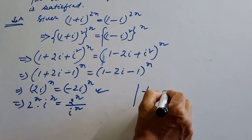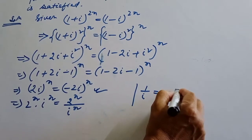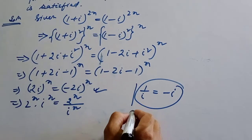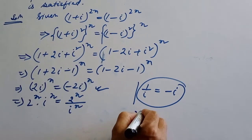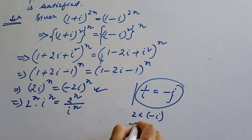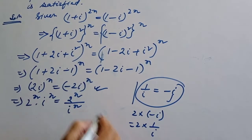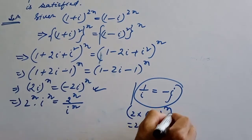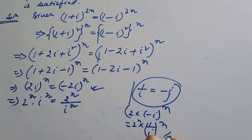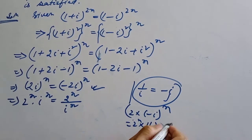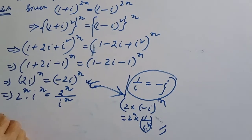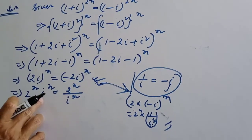Note that 1/i equals -i. So simplifying, 2^n · i^n equals (-2)^n · i^n. Cancelling 2^n from both sides gives i^n = (-1)^n · i^n.